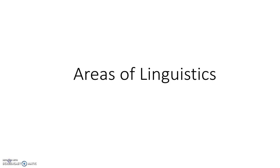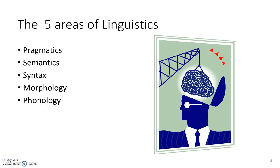In this presentation we'll be looking at the areas of linguistics. You should understand that linguistics covers five basic areas. Now of course these areas can be further divided into more specific areas and there are a few peripheral areas that are not mentioned here. Basically there are five areas: pragmatics, semantics, syntax, morphology, and phonology.